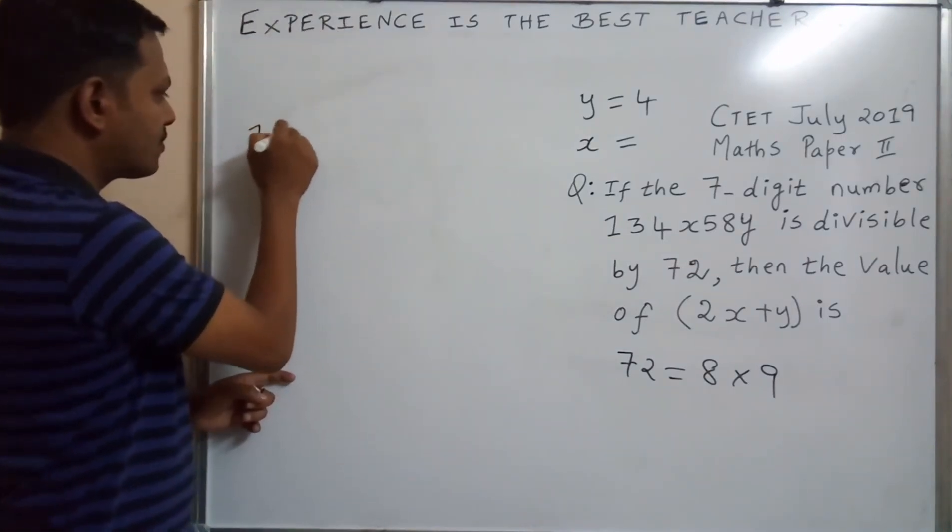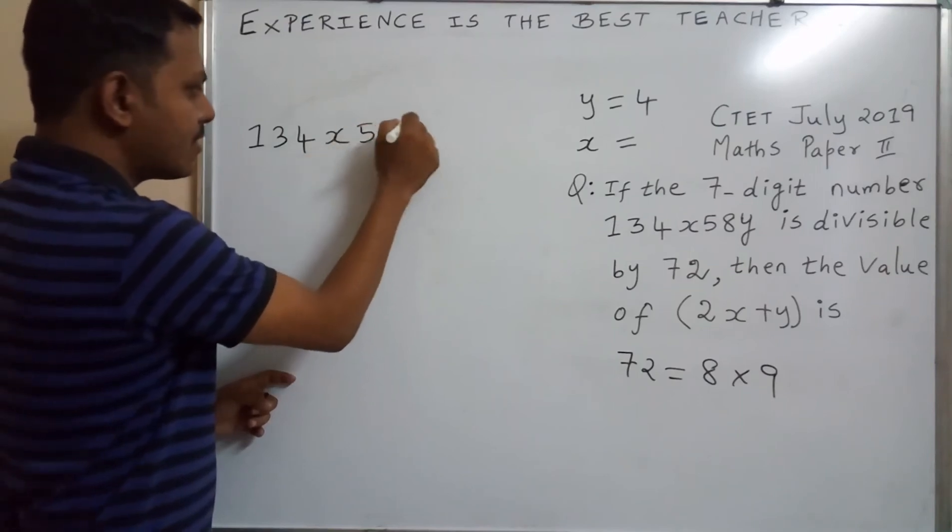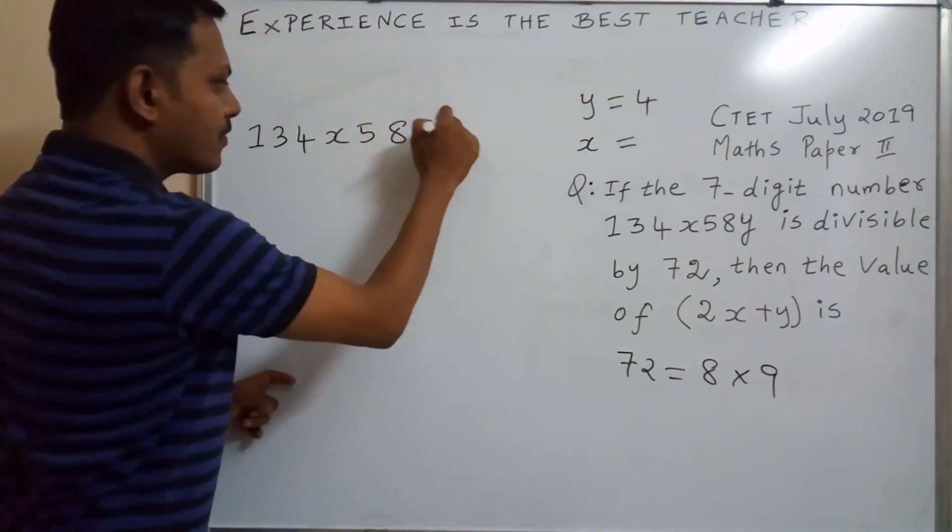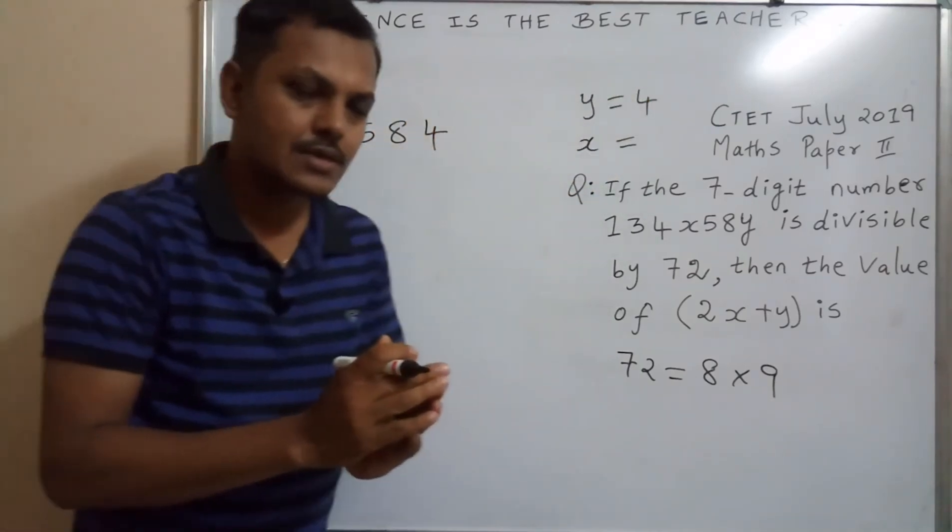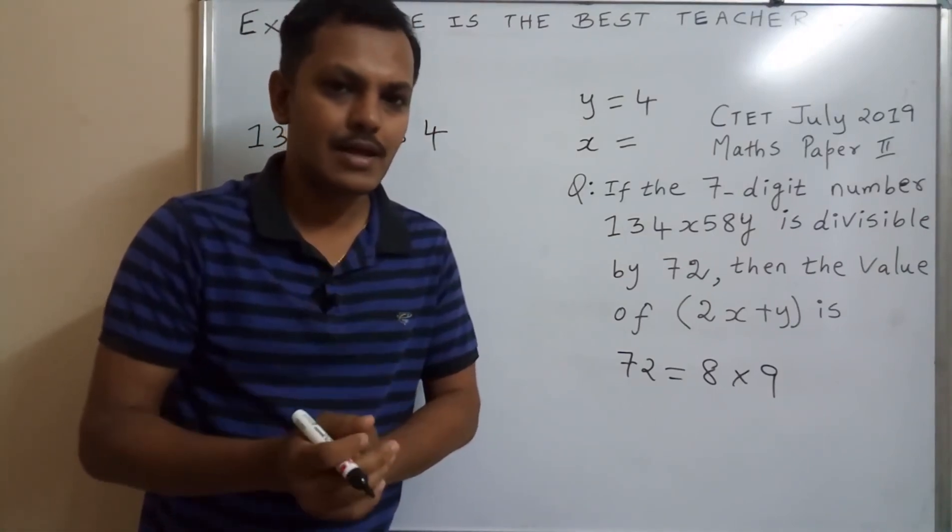1, 3, 4, so x, we are going to write, so write x, 5, 8, before y equal to 4. Add these numbers, then what is the value of x, then it is divisible by 9.